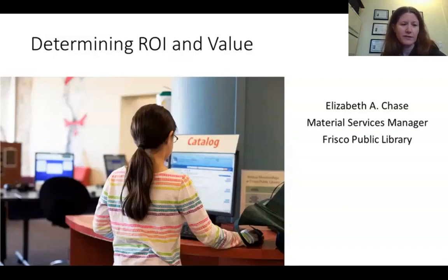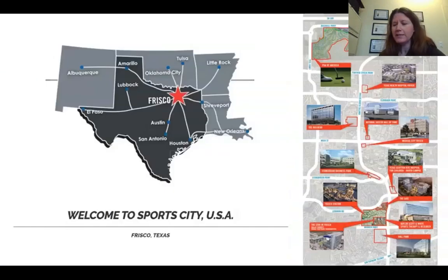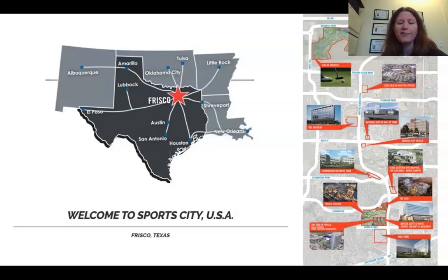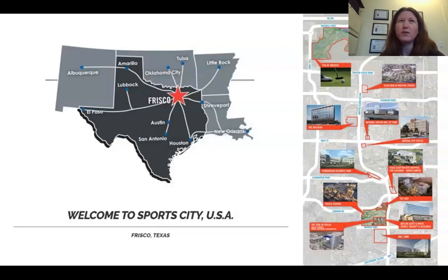This is our youth services floor here in Frisco, Texas, in northern Texas, close to Oklahoma. It's a high-growth city. Between 2013 and 2017 alone, the city's population increased 24%. About 25 years ago the population was around 9,000 people; currently it's about 190,000. We see about 6% annual population growth.